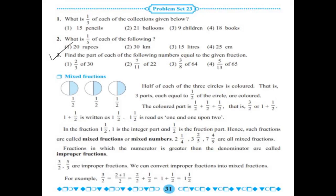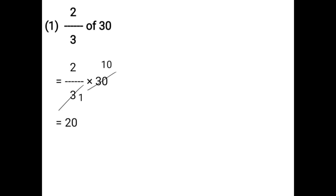Find the part of each of the following numbers equal to the given fraction. 2 upon 3 of 30. That is equal to 2 upon 3 — in place of 'of', take the multiplication sign — that is into 30. You can divide 30 by 3 or use the cancellation method: 3 ones are 3, 3 tens are 30, that is equal to 2 tens, which is 20.